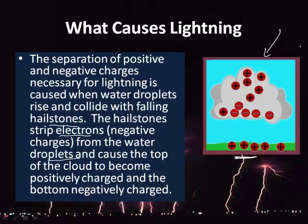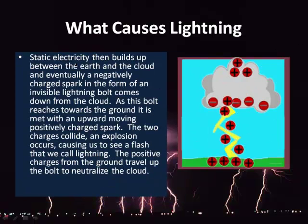Static electricity then builds up between the earth and the cloud. Eventually, a negatively charged spark in the form of an invisible lightning bolt comes down from the cloud. As this bolt reaches toward the ground, it is met with an upward-moving positively charged spark. The two collide, causing an explosion — that's the thunder — and producing the flash we call lightning. The positive charges travel up the bolt to neutralize the charge, reaching a neutral state.